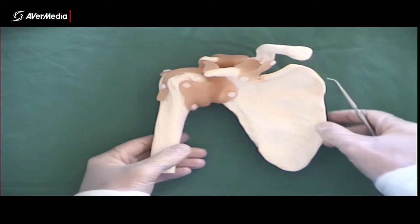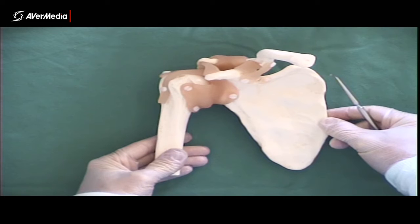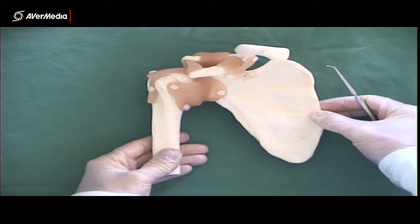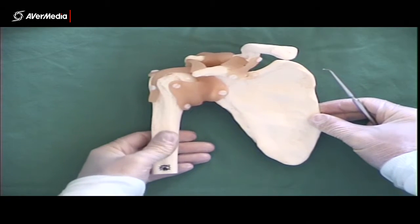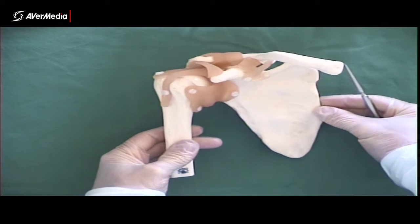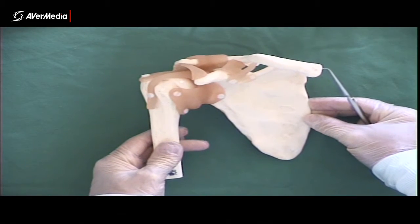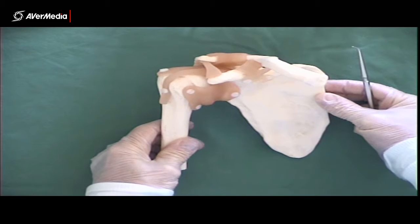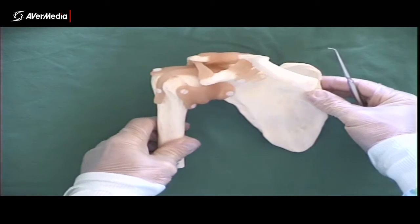So now looking at some of the ligaments around the shoulder. Here we've got a plastic and rubber shoulder model. So looking firstly at the acromioclavicular ligament. So here we have a right shoulder model.